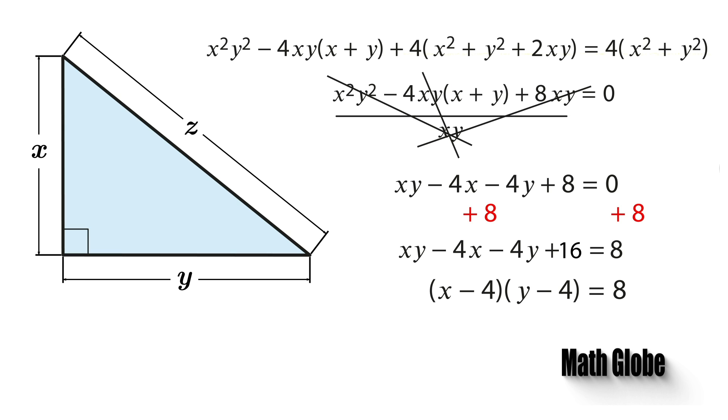From this, since the variables are integers, there are only finitely many possibilities. The only solutions for x and y according to the equation will be as follows.